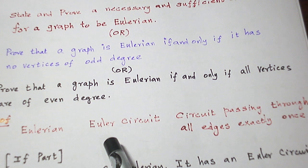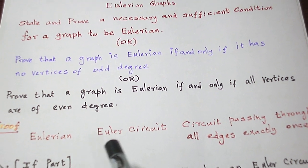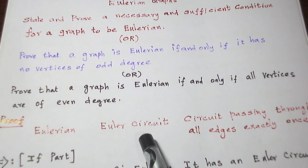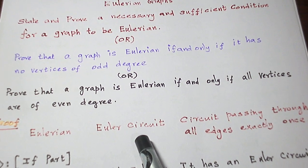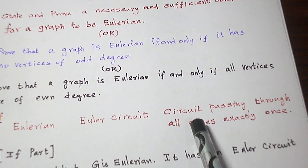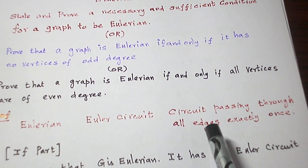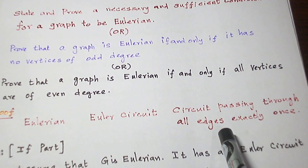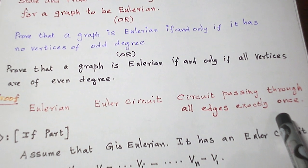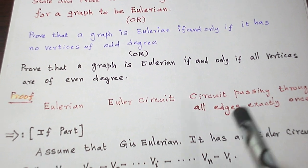First of all, let us see what is an Eulerian graph. A graph with an Euler circuit is called an Eulerian graph. And what is an Euler circuit? A circuit passing through all the edges of the graph exactly once is called an Euler circuit.